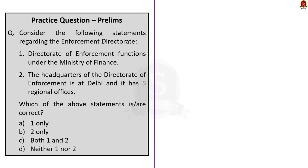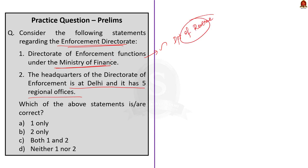Question four: Consider the following statements regarding the Enforcement Directorate. Statement 1: The Directorate of Enforcement functions under the Ministry of Finance. Statement 2: The headquarters of the Directorate of Enforcement is at Delhi and it has five regional offices. Statement 1 is correct — in 1960, administrative control was transferred from the Department of Economic Affairs to the Department of Revenue, which is under the Ministry of Finance. Statement 2 is also correct — the Directorate of Enforcement with its headquarters at New Delhi is headed by the Director of Enforcement, with five regional offices at Mumbai, Chennai, Chandigarh, Kolkata, and Delhi, headed by Special Directors of Enforcement. The correct answer is option C: both 1 and 2.